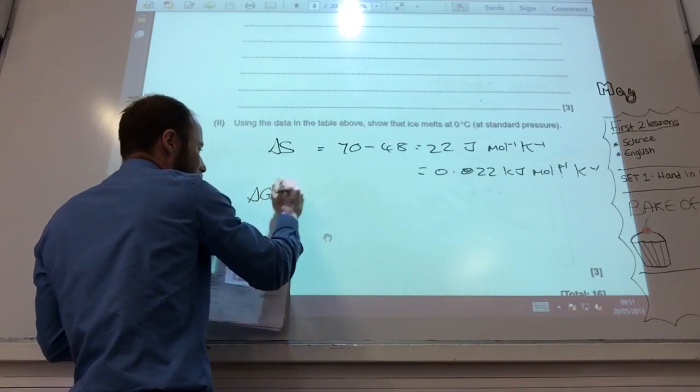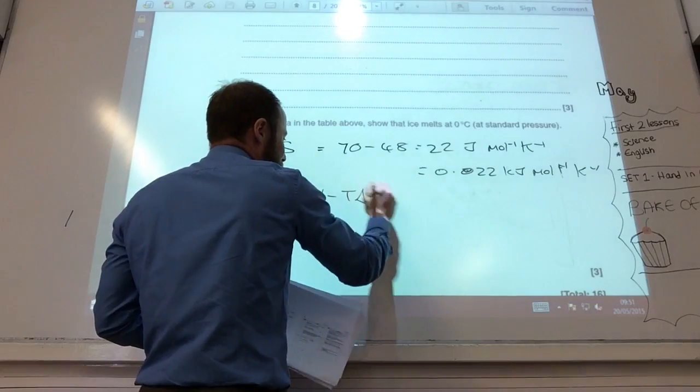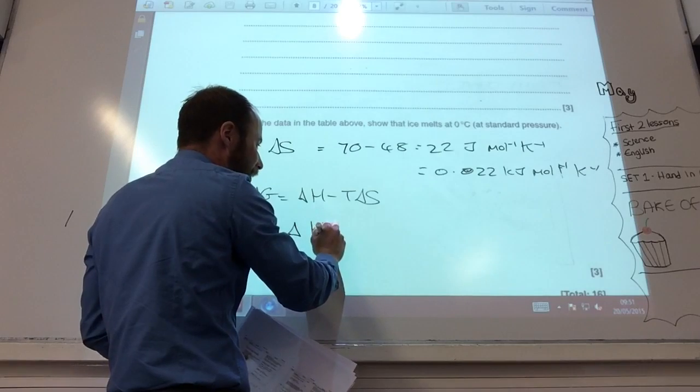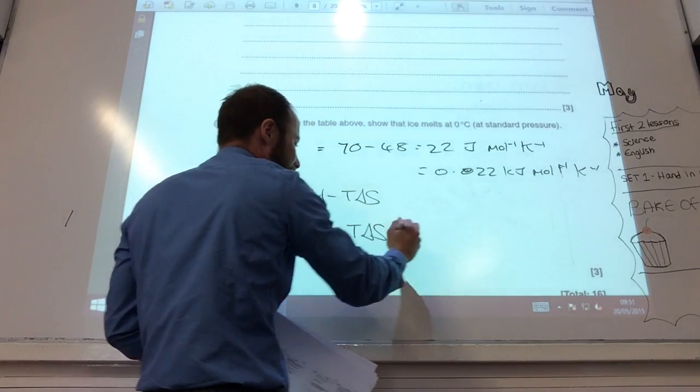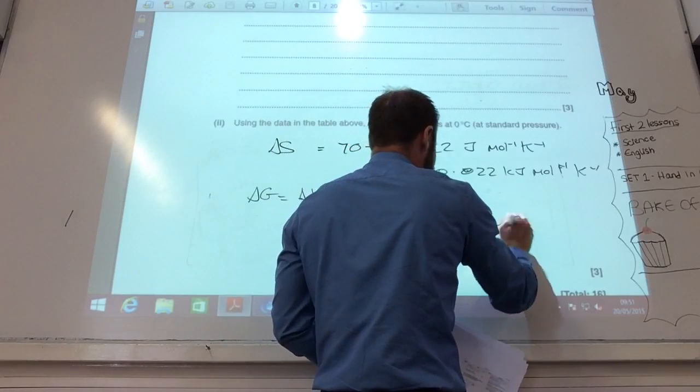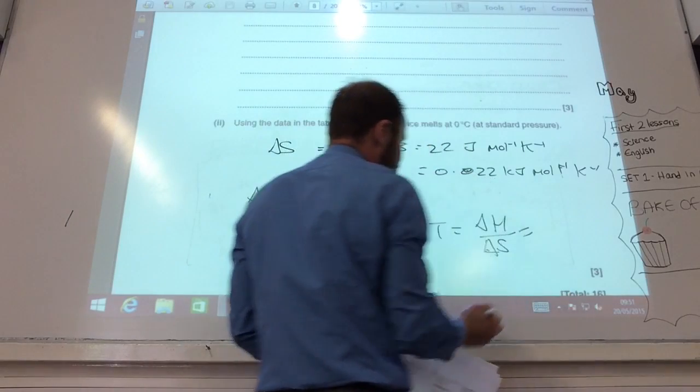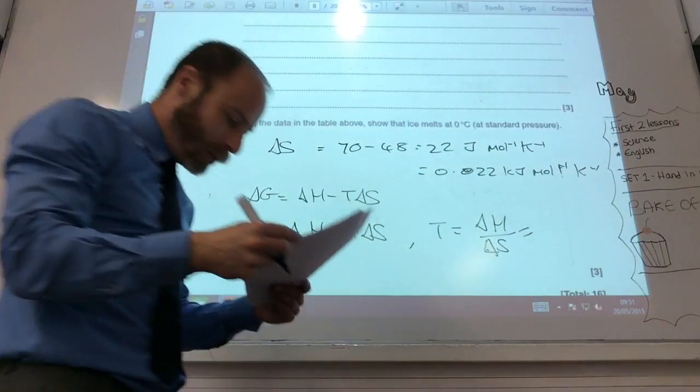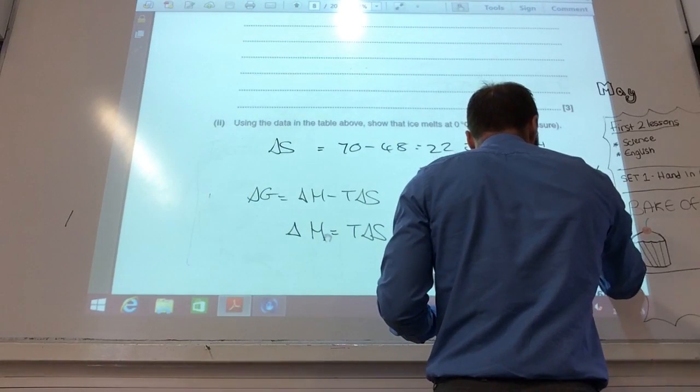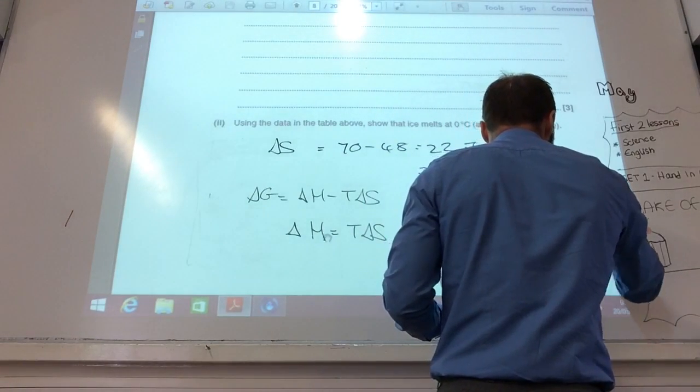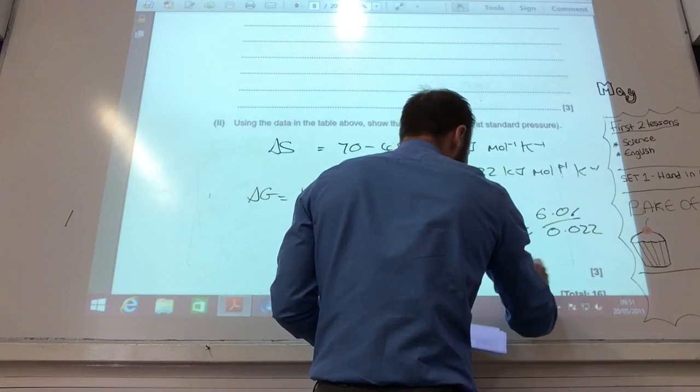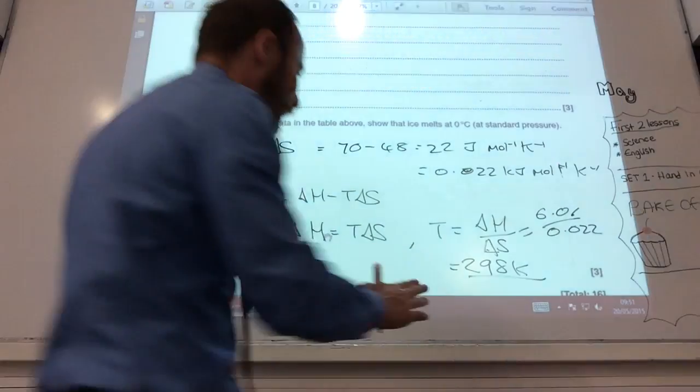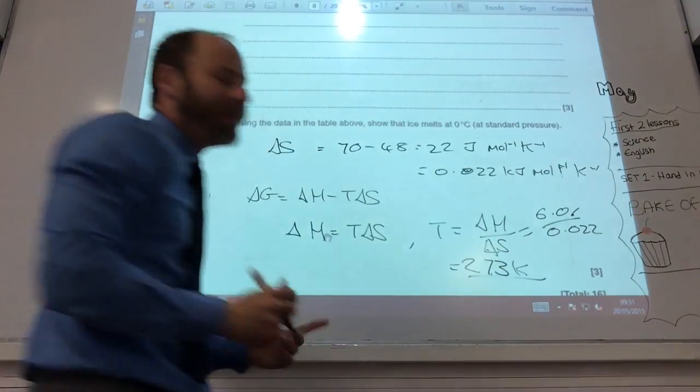Therefore, you know delta G equals delta H minus T delta S. If it's at equilibrium, delta G is zero. So delta H equals T delta S or T equals delta H divided by delta S. Delta H, what was delta H? Delta H was 6.01. Delta S, we've worked out, is 0.022, and that gives me 273 kelvin, zero degrees Celsius.